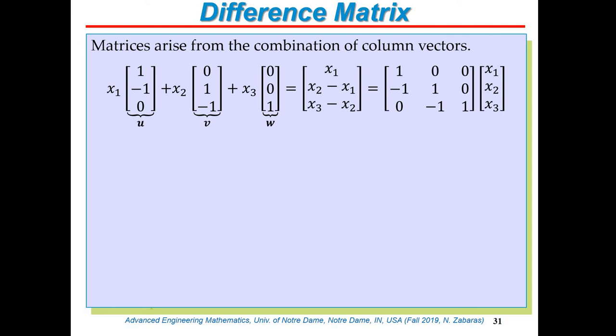The name may sound irrelevant today, but this matrix is extremely important in numerical methods — think of finite differences. It's a very special matrix. The linear combination of u, v, and w forms this difference matrix A times x.